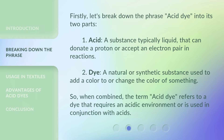Let's break down the phrase 'acid dye' into its two parts. First, acid: a substance, typically liquid, that can donate a proton or accept an electron pair in reactions. Second, dye: a natural or synthetic substance used to add color to or change the color of something. When combined, the term 'acid dye' refers to a dye that requires an acidic environment or is used in conjunction with acids.